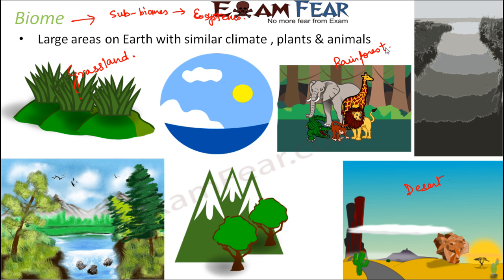For aquatic biomes, you can think of marine biomes like the sea, freshwater biomes, estuaries, and coral reefs. Oceans and freshwater are also examples of aquatic biomes. These are all biomes because they are large areas with similar climate, plants, and animals. For example, that entire desert has almost similar climate, similar types of plants and animals. Similarly, an entire grassland would have similar climate, plants, and animals.